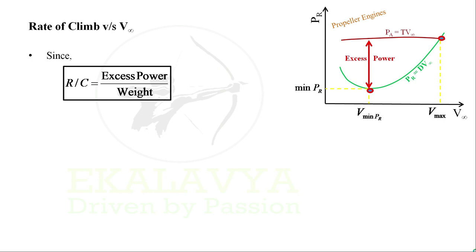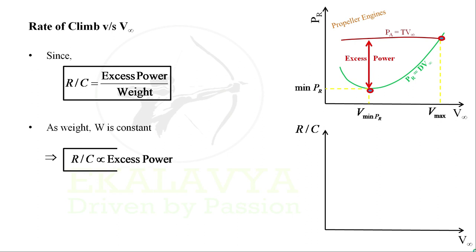Let's try to plot rate of climb versus V infinity now. As weight is constant, assuming fuel consumption to be negligible, rate of climb is directly proportional to excess power. From power required versus V infinity plot, we can see that excess power first increases, so rate of climb first increases with velocity.